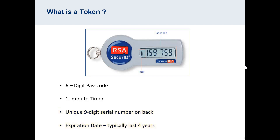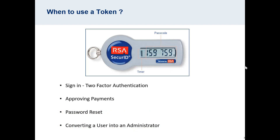In terms of when you will use this token, there are a few scenarios. The first one you're likely to encounter is on the sign-in page of RBC Express. When you were originally enrolled for RBC Express, you would have had a conversation with your RBC representative about whether or not you were interested in two-factor authentication. Two-factor authentication is what we call using a token to sign in to RBC Express. If you agreed to that security setting, then all users on your profile will be using a token every time they sign in. But if that is not enabled, you'll be able to sign in without a token.